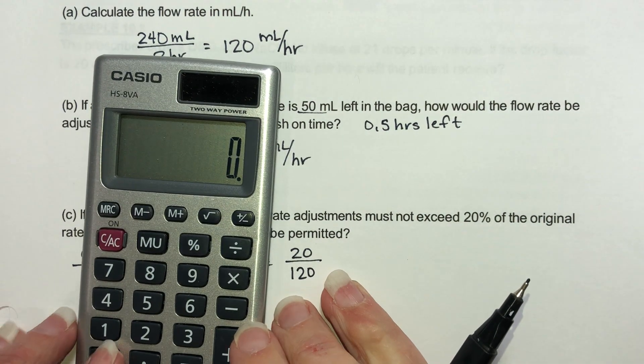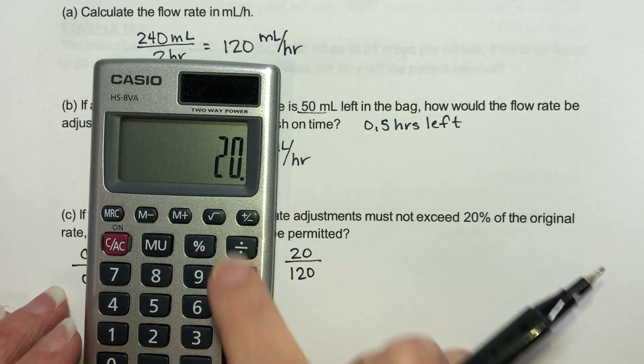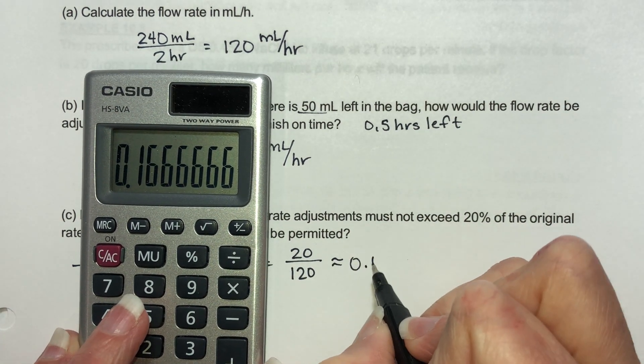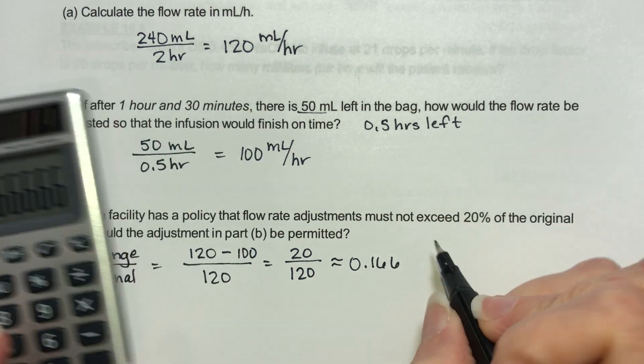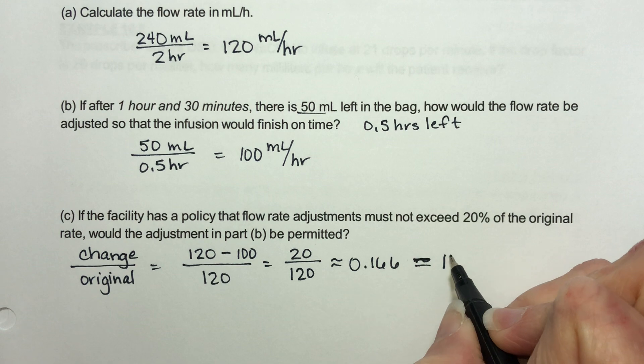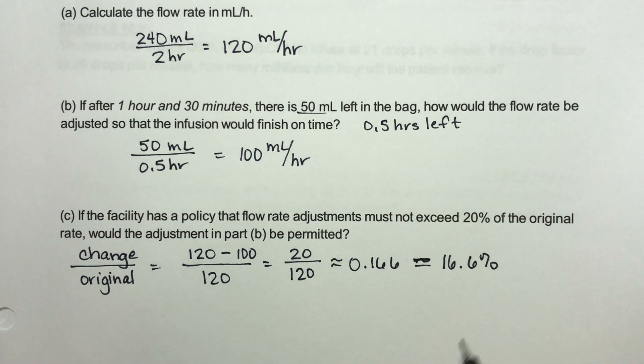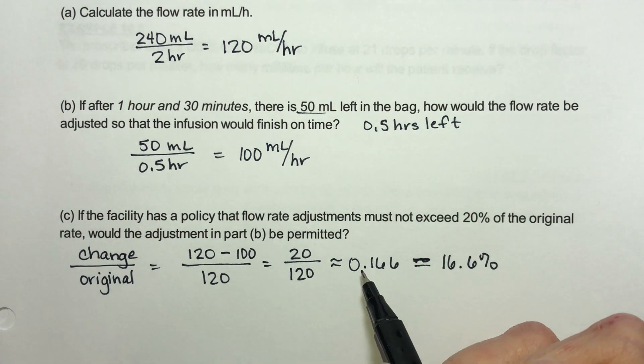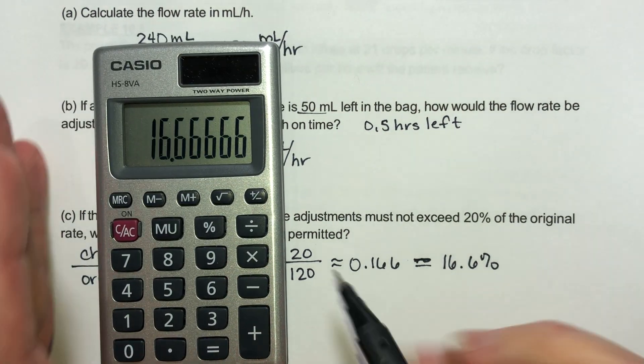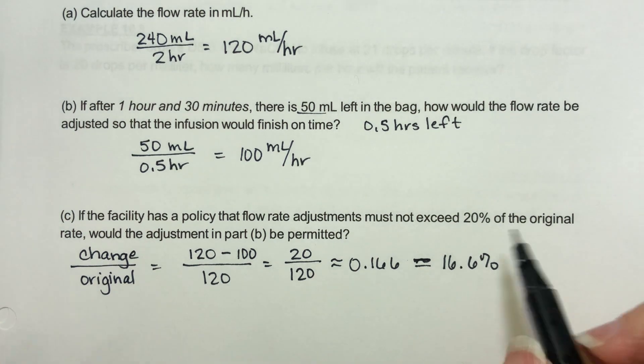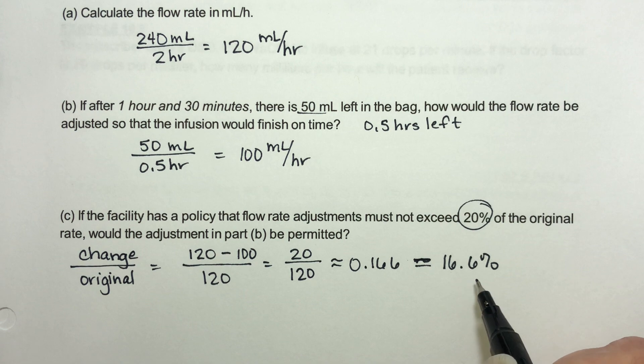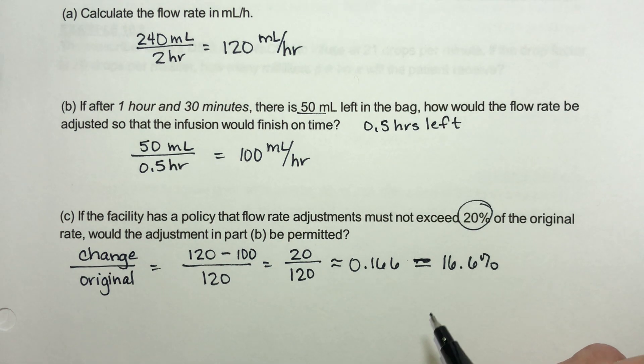If you do this arithmetic, you get approximately 0.166, which is the same thing as 16.6%. You either multiply it by 100 or just think about moving your decimal place over two. It should not be, the change should not be larger than 20. 16.6 is smaller than 20. So yes, this would be allowed.